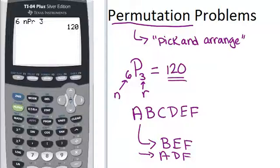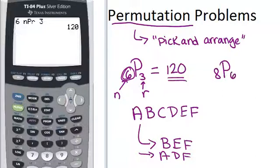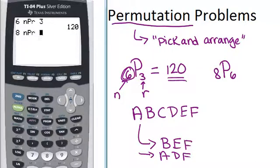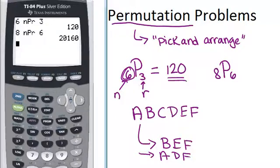In your calculator, first put in the number you have for N, which is always the number before the P. For example, if we wanted to do 8P6, we would first push 8. Then go into math, scroll over until you see the probability section, then scroll down to NPR, click your second number which is 6, and push enter. We get 20,160. So if you have 8 different objects and you're choosing and arranging 6 of them, there are over 20,000 different ways to do that. Our answer is 20,160.